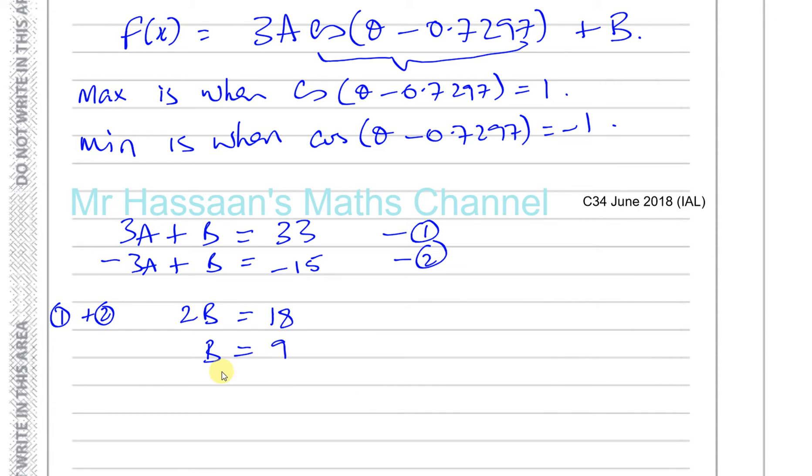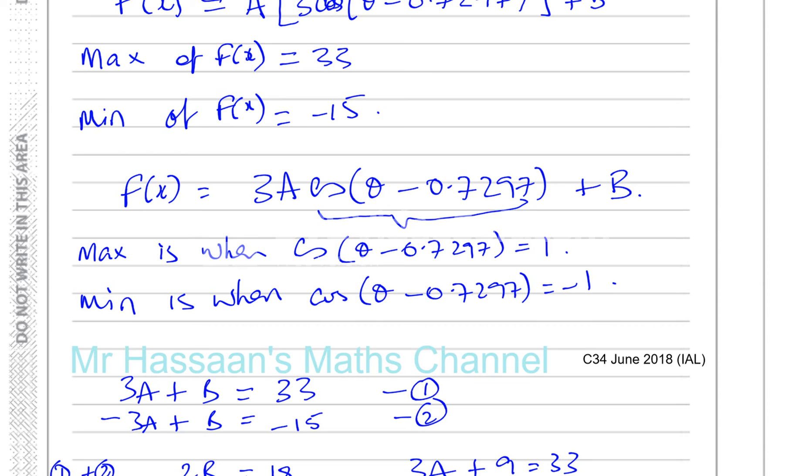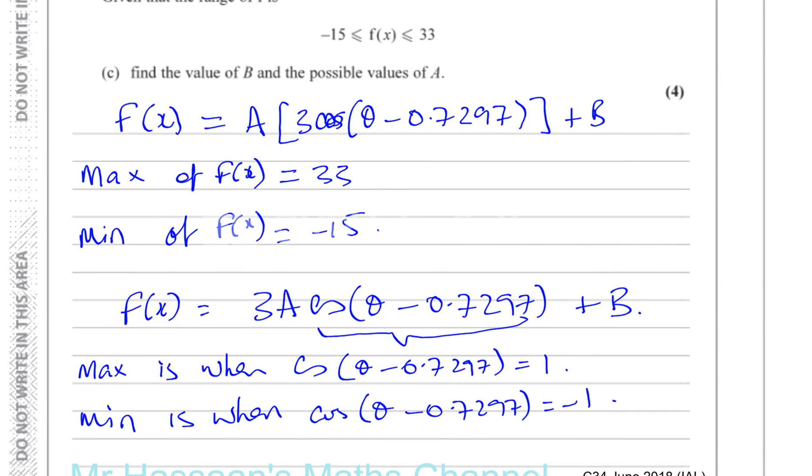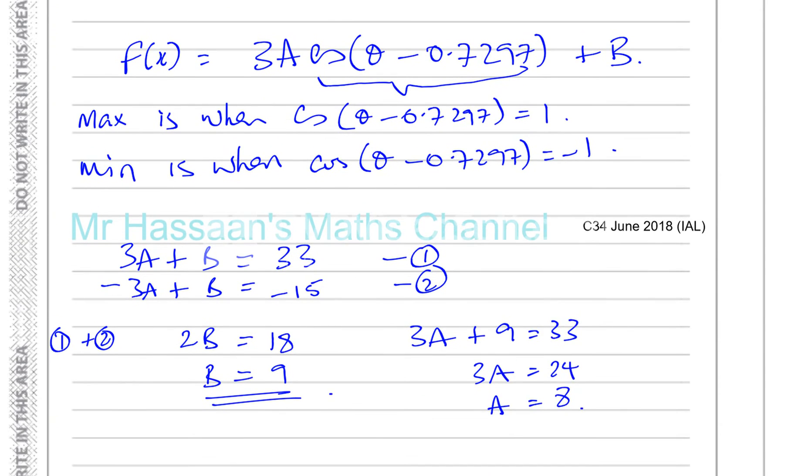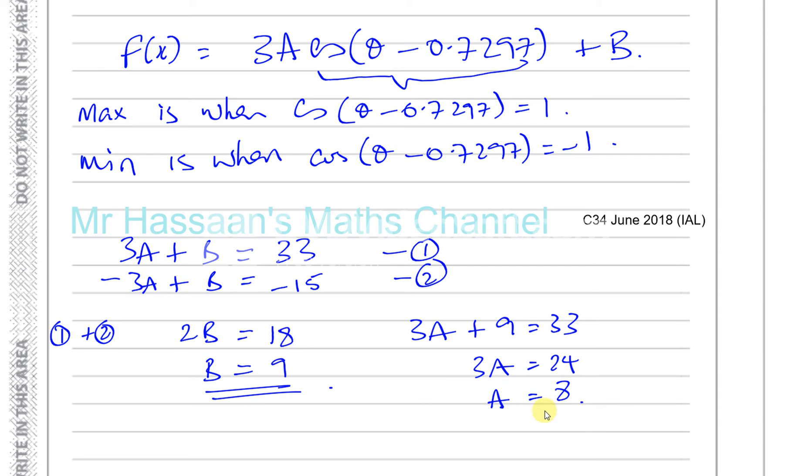So, we found what B is, and then the possible values of A. Well, let's just find one of the values of A. When B is 9, then you can say 3A plus 9 is equal to 33. So, 3A is equal to 33 minus 9, which is 24. So, A is equal to 8. That's one possible value of A.